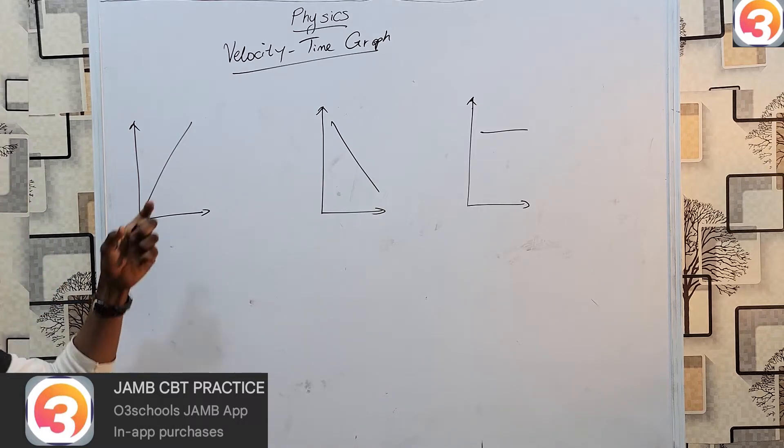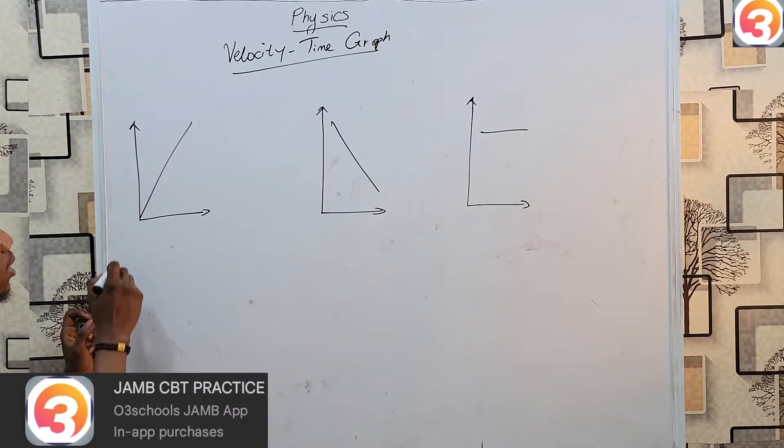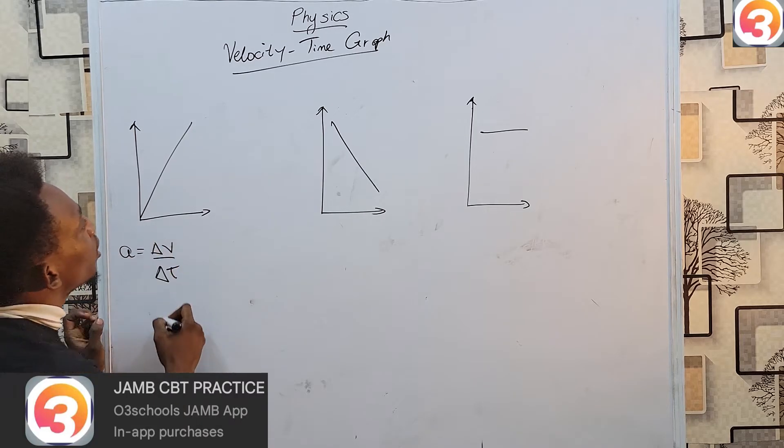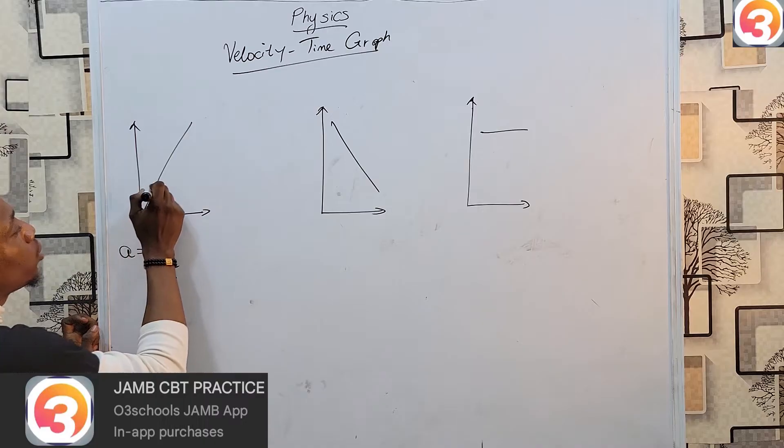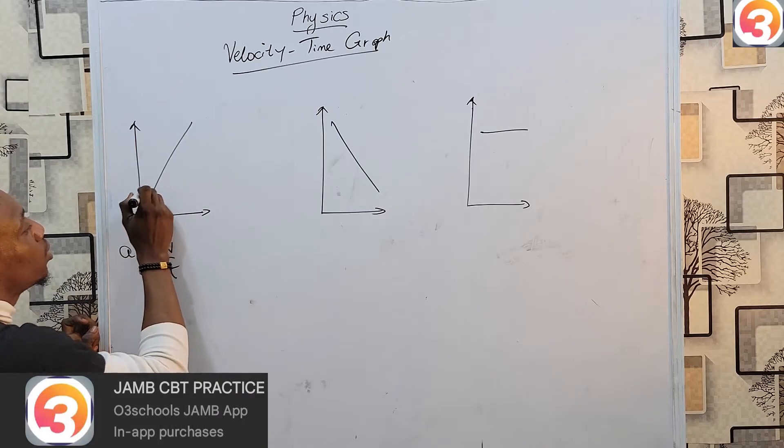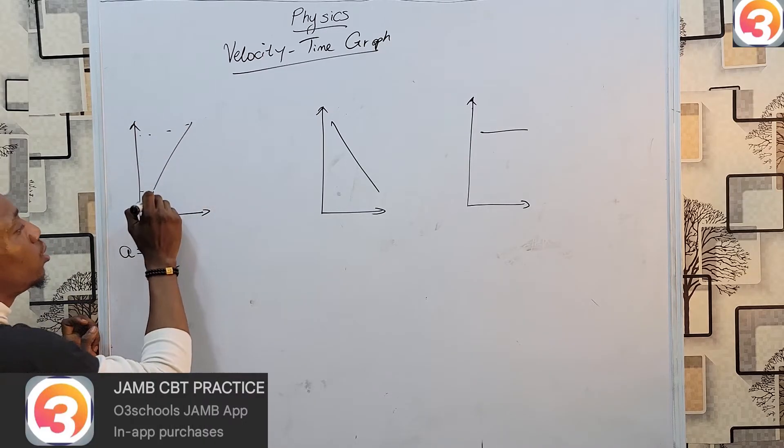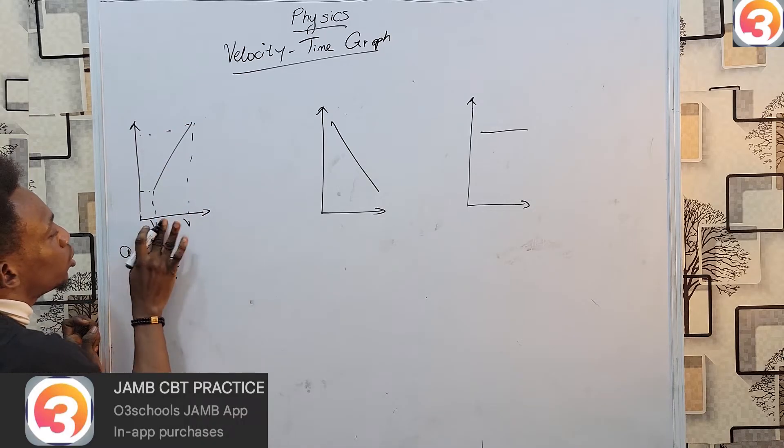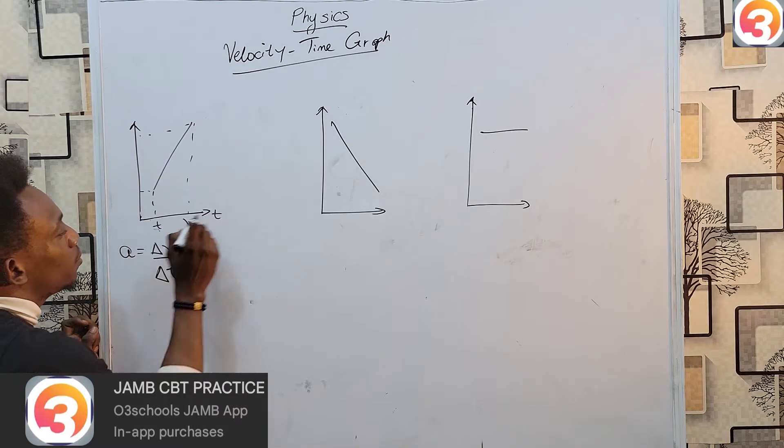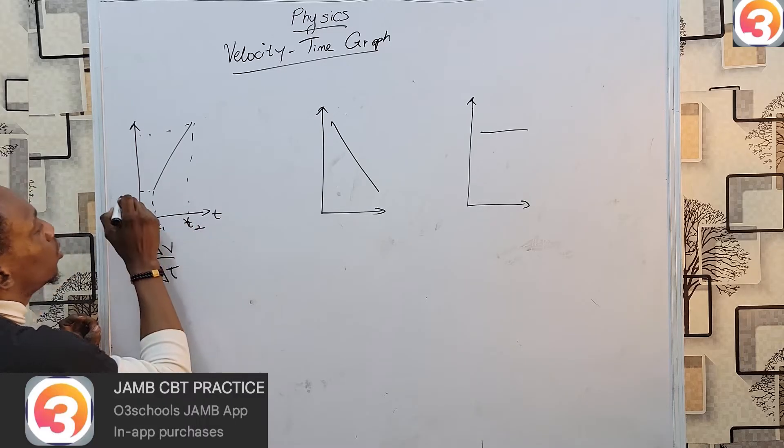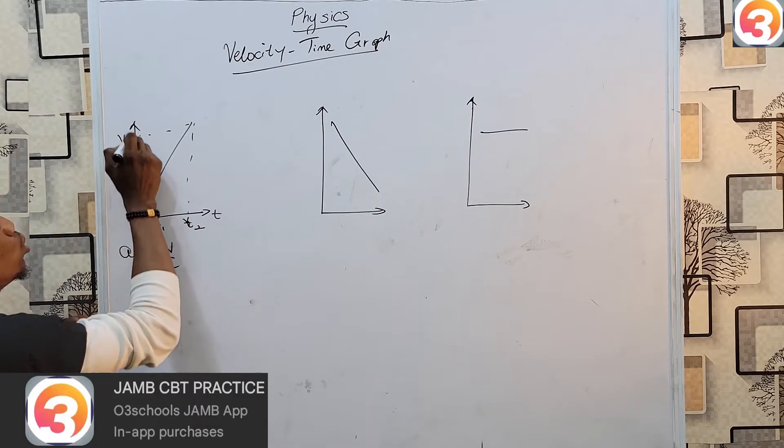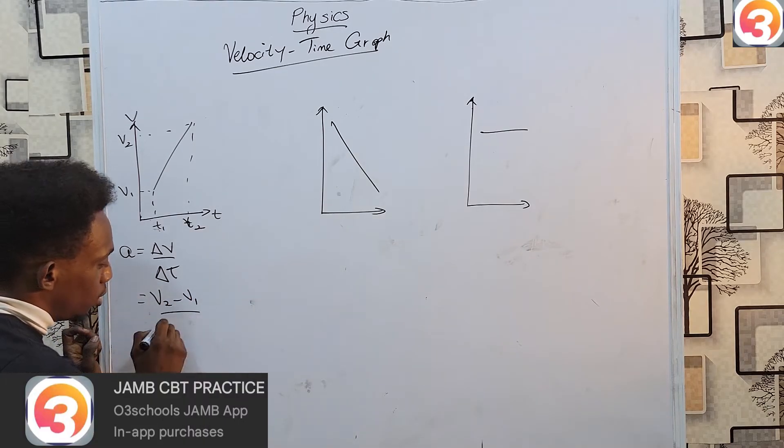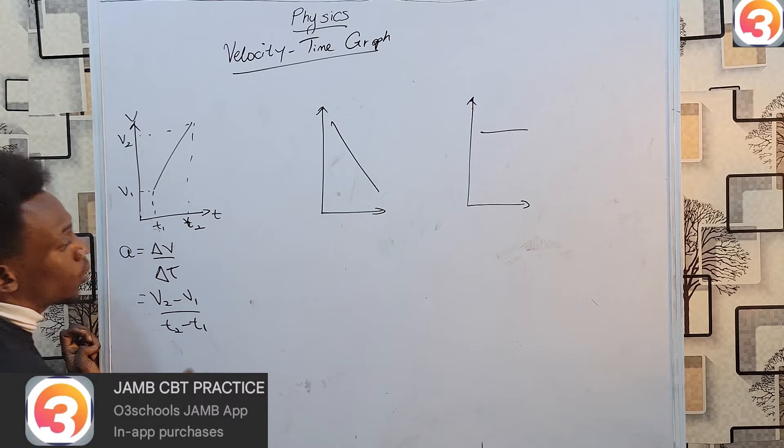For this one, sloping upwards, we have acceleration, and obviously, that will be change in v over change in t, the slope of the graph. If I just take my point from here, and here, then here, and here, this would be t1, because this is my time, t1 and t2, and this is v1 and v2. This is velocity. The acceleration would be v2 minus v1 over t2 minus t1.